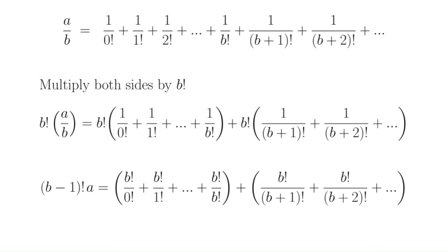This gives us our contradiction. Assuming that e could be written in the form a over b, we have an integer equals another integer plus a number that's strictly between 0 and 1 — which is not an integer. So that's a nice little proof that e is irrational, that it can't be written in the form a over b.